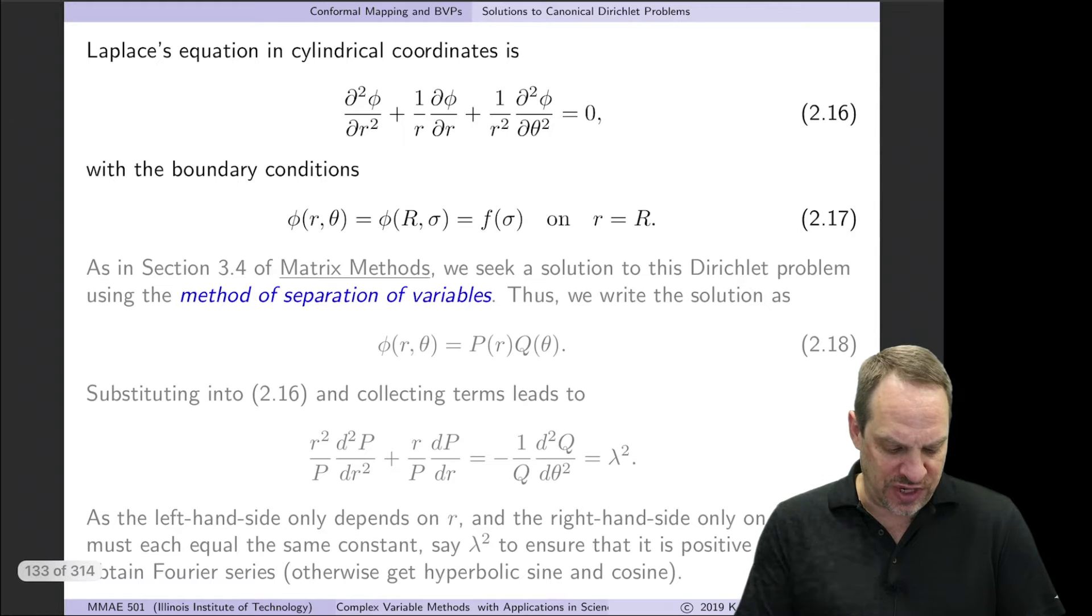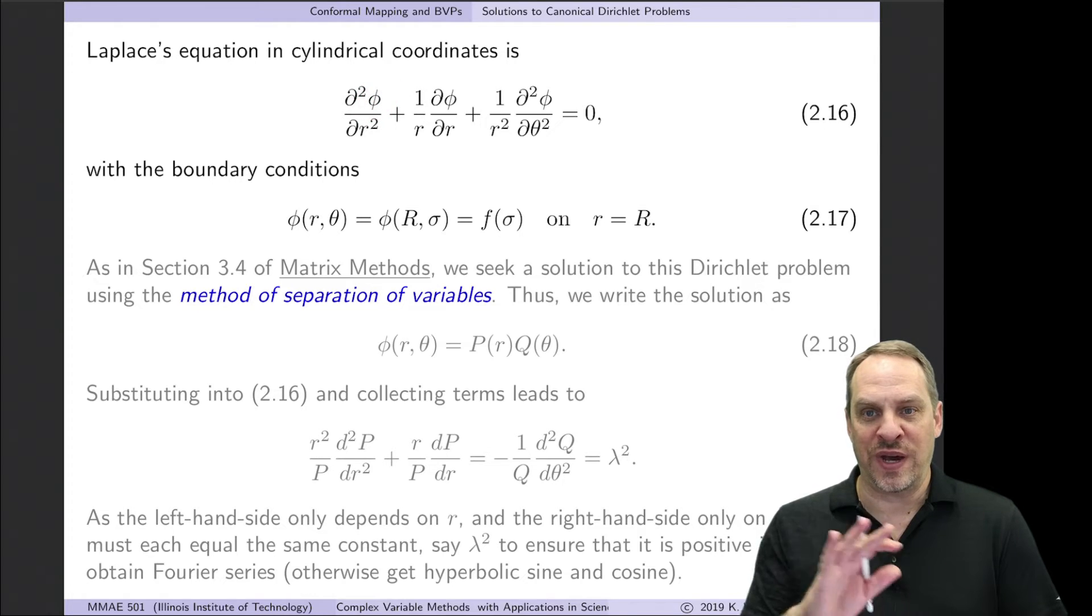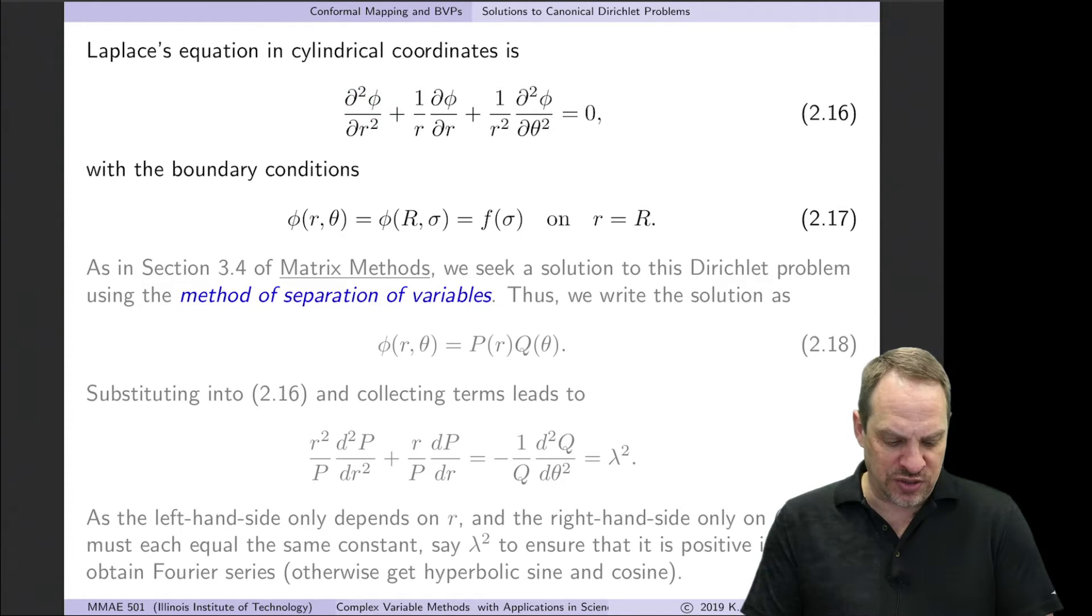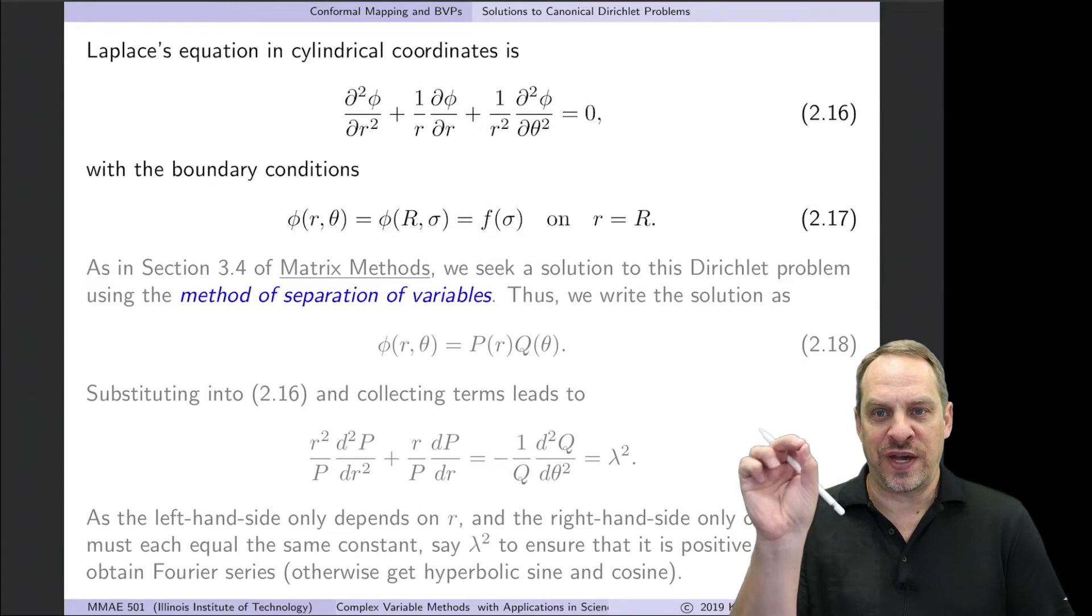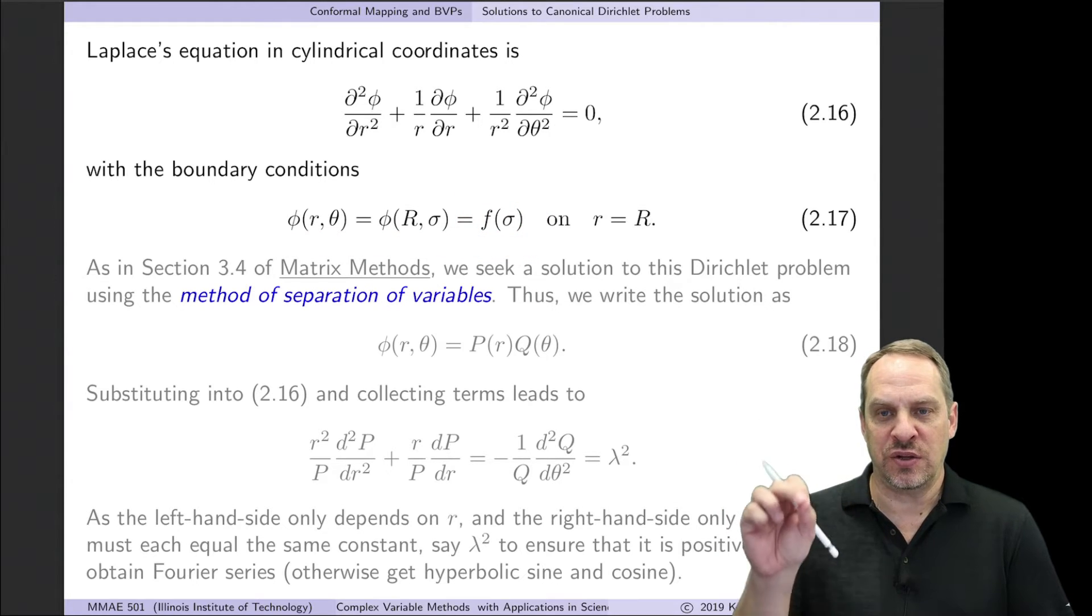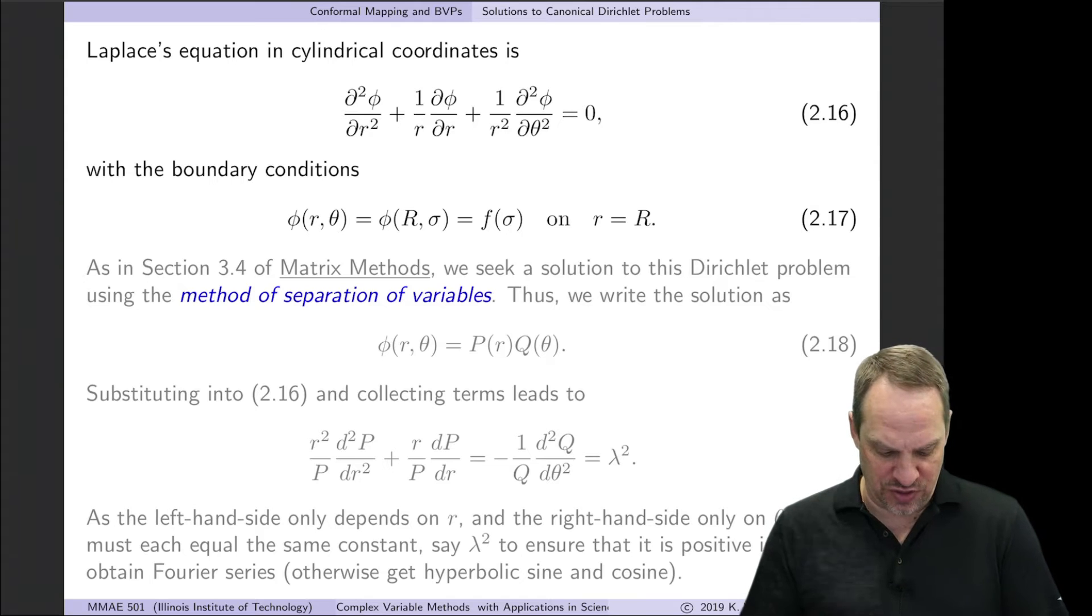Here we have Laplace's equation written in polar or cylindrical coordinates for the dependent variable phi throughout the geometry. In addition to Laplace's equation, we have the Dirichlet boundary conditions where phi on the boundary, so little r is R and theta is sigma, is known. It's some known function, little f of sigma. Those are the values of phi along the entire bounding curve.